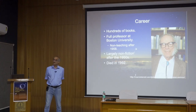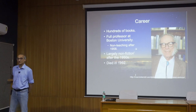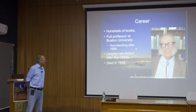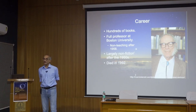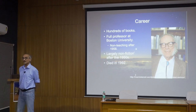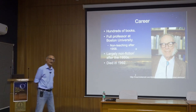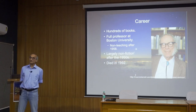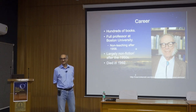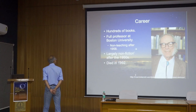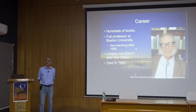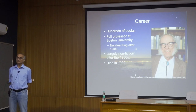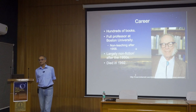Asimov wrote hundreds of books — there's no real count because books were published under different names. He was a full professor at Boston University but became non-teaching after 1958, because that's when he started earning more from science fiction than from his faculty position. His salary at Boston University was $7,000 a year in 1958. They agreed to let him keep his full professorship but not pay him any salary. After the 1950s he wrote largely non-fiction — purely a commercial decision, because non-fiction paid more per word than fiction.